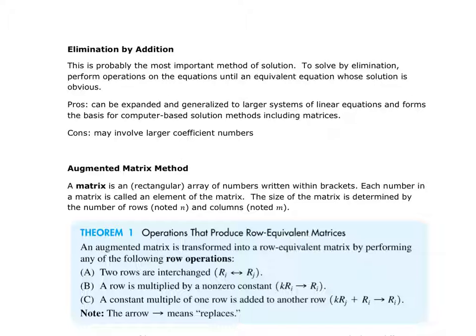First, we're going to take a look at elimination by addition. With elimination by addition, we're going to try to eliminate one of the two variables by multiplying whatever we need to make the coefficients match with opposite signs. So when we add the two equations, either the x or the y will be eliminated. We prefer the elimination method over substitution because we can expand it to much larger systems, and it leads us to the matrix method. The downside is that if you're doing this by hand, some of the coefficients may become larger numbers — but that's not a big deal.